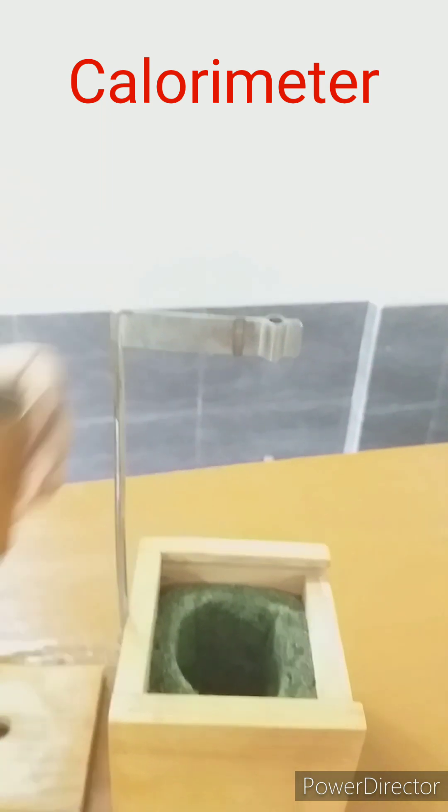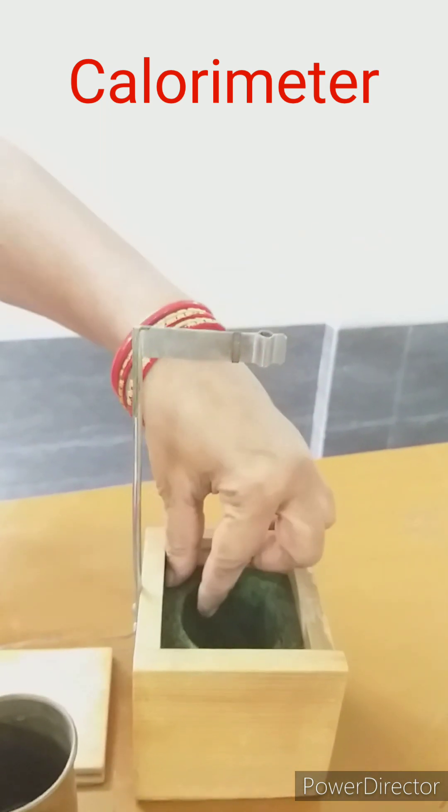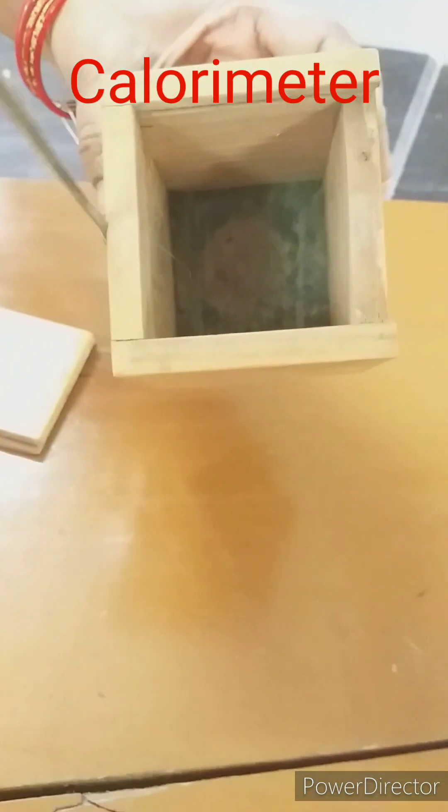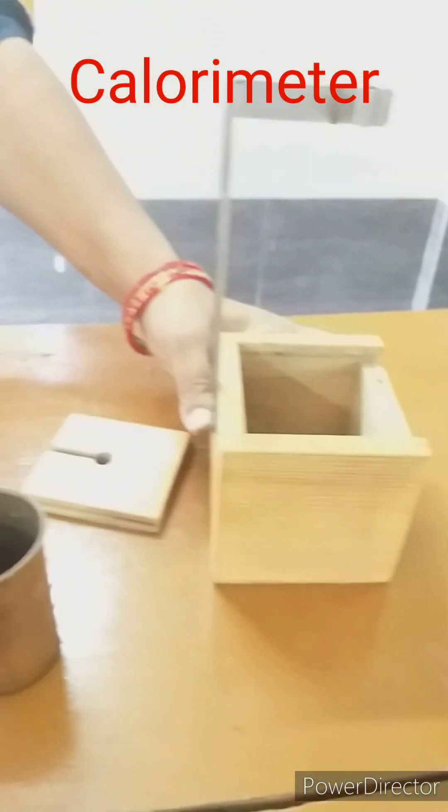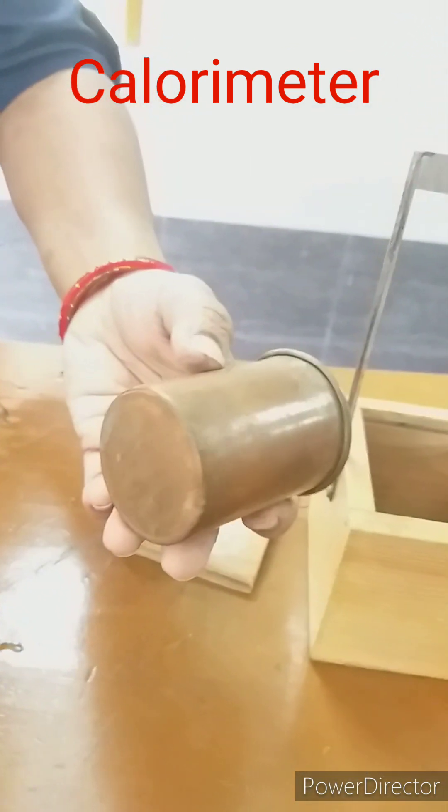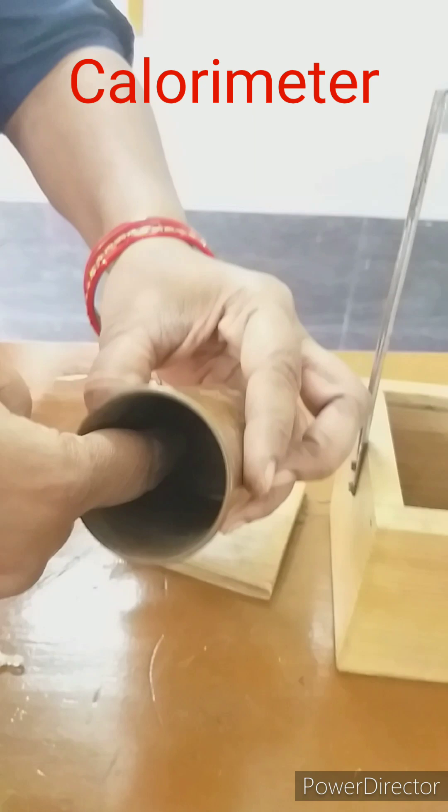We will see how we can prevent heat loss by different means. Heat loss by radiation can be prevented by polishing the inner surface and outer surface of the calorimeter.